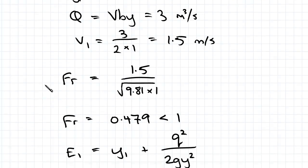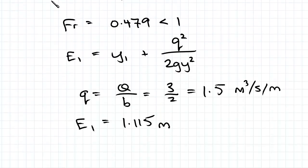Now we find our e1 which we did in the previous example. We find little q from capital Q, sub in the values we know and get e1 equals 1.115 meters.